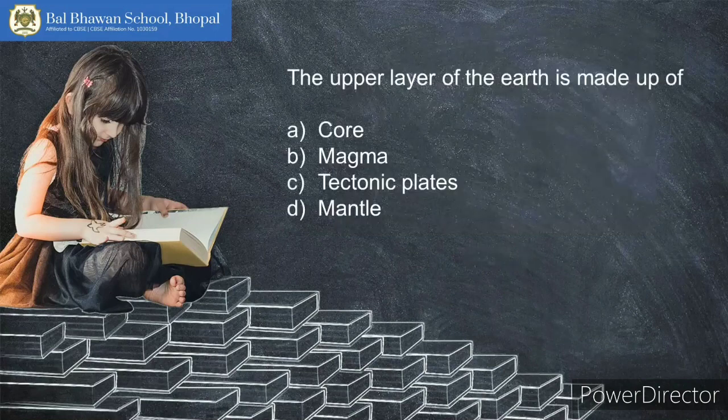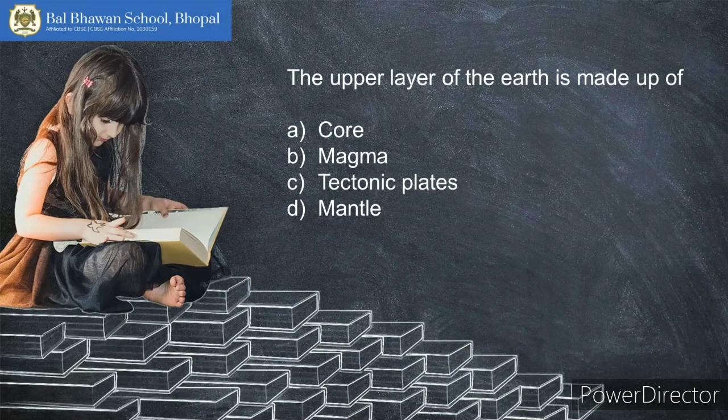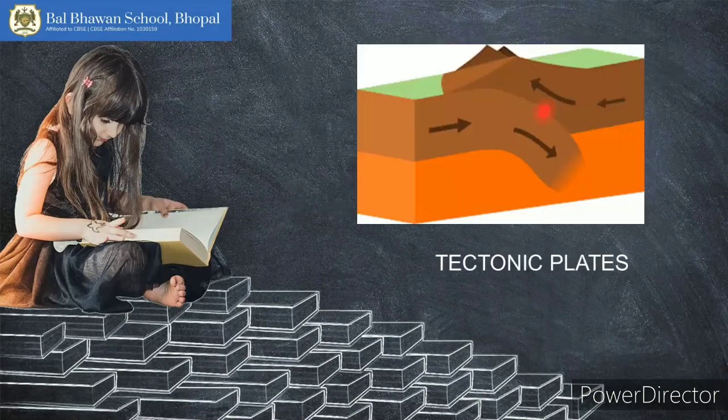The upper layer of the earth is made up of what? Is it magma, tectonic plates, or matter? Come on, you all know the answer! And the correct answer is — exactly — tectonic plates. We can picture that they form the uppermost layer of the earth.